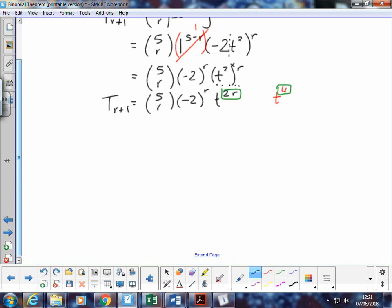So we're going to write something down. For t to the power of 4 term, we're going to say that 2r is equal to 4.